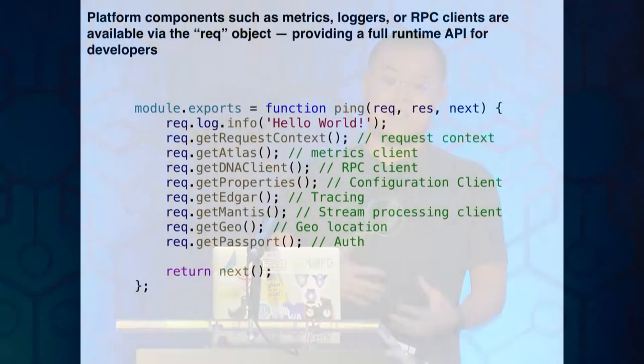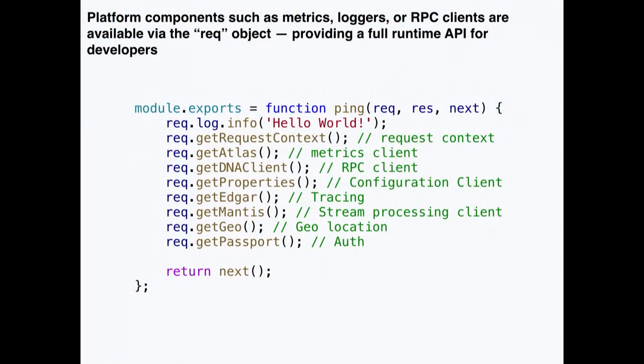By default, all platform components — metrics agents, loggers, RPC clients — are initialized and ready to go when your function is loaded. You don't have to initialize those yourself. By the time your function executes, everything is there and ready to go. This is really important because you're no longer doing the setup — back to the chair analogy, you could assemble it wrong, but here everything's set up for you, improving developer velocity.